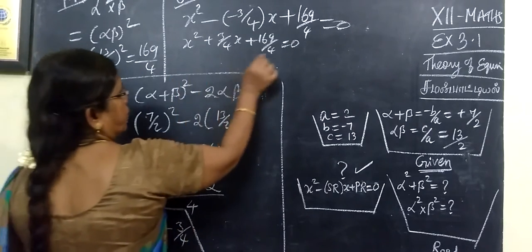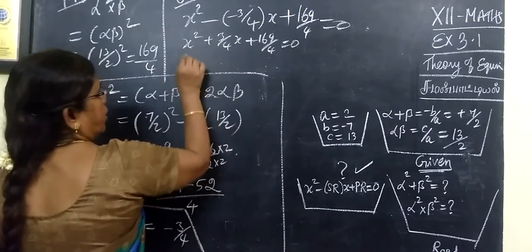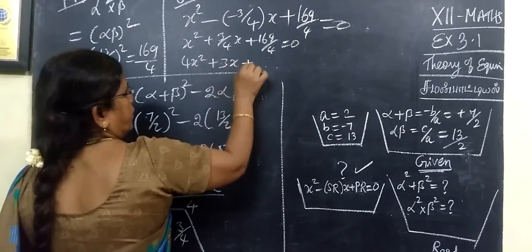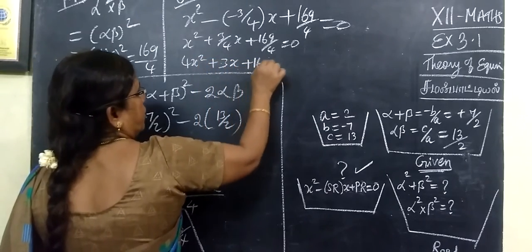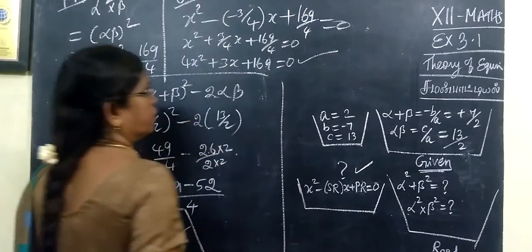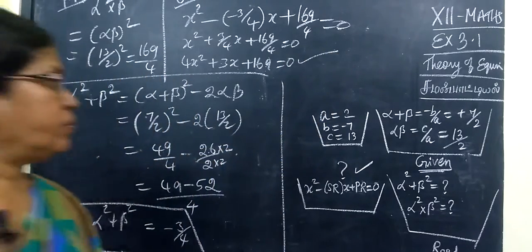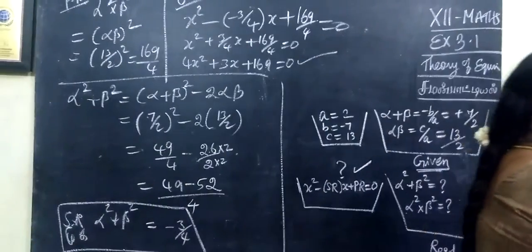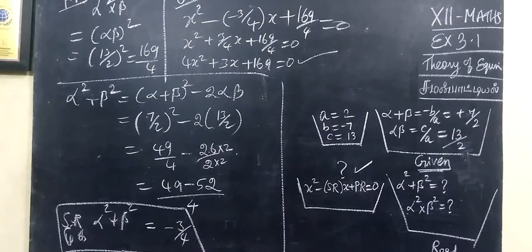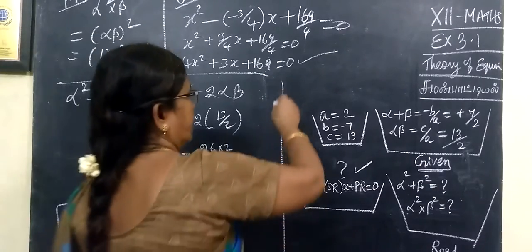Now, what is the LCM? LCM is 4, so we cross multiply: 4x squared plus 3x plus 169 equal to 0. We check the answer for this — this is the correct answer.